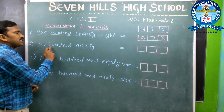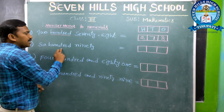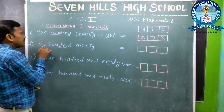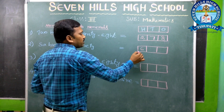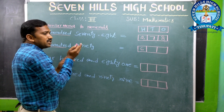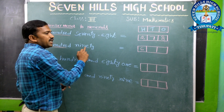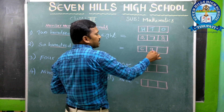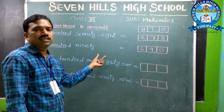Now 690. How many hundreds is there? 6. So in the 100s place, write 6. 90 — the 10s and 1s together: 90 means in the 10s place it is 9, and in the 1s place it is 0. So the number is 690.